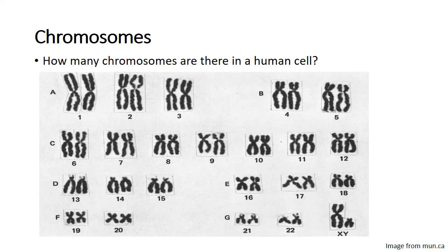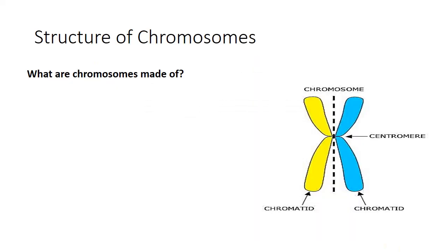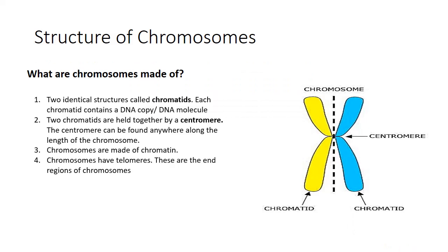There are 46 chromosomes in the human cell, which means there are 23 pairs of chromosomes. As you look at this image — which we call a karyogram, an image of the chromosomes within the body — you will see that the chromosomes are arranged in pairs, which we call homologous pairs. We're not going to go into that detail today, but there are 23 pairs.